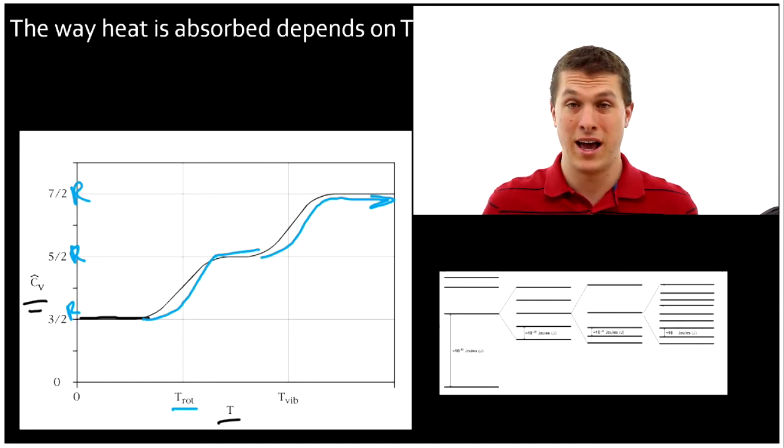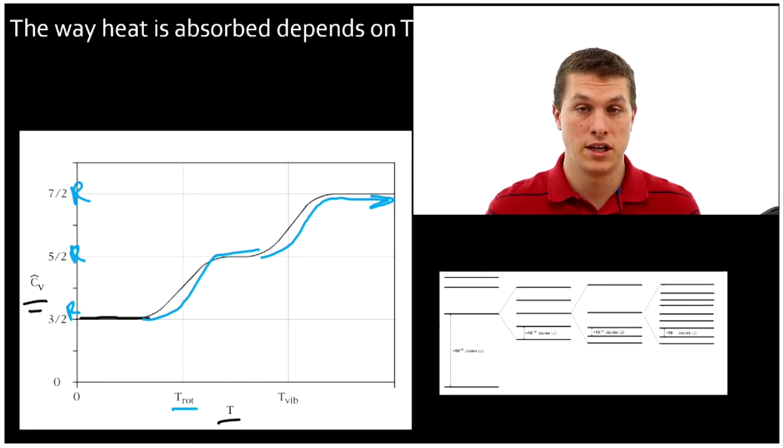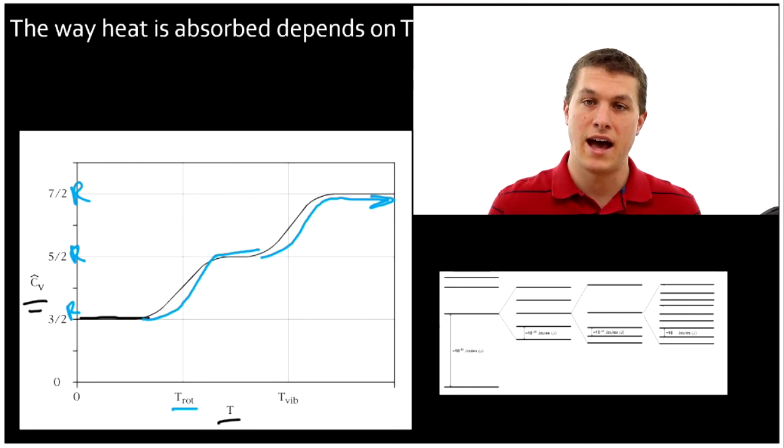This, by the way, is a very idealized picture of our heat capacity over temperature and is particularly relevant for ideal gases. Real gases have all sorts of complex relationships between temperature and heat capacity. And so if we actually want to look at our heat capacity, we can't just treat it as one number. We have to actually realize that our heat capacity is a function of temperature. And that's why we need calculus.